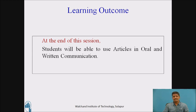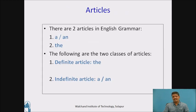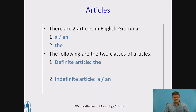At the end of this session students will be able to use articles in oral and written communication. Now let us understand the concept of articles in English grammar. There are two articles in English grammar: first, 'a' or 'an', and second, 'the'. The following are the two classes of articles: first, definite article 'the', and second, indefinite article 'a' or 'an'.